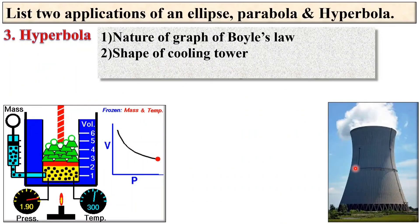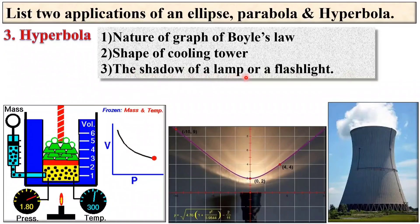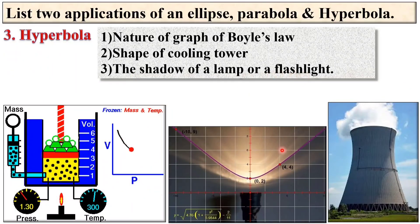Next shape of cooling tower. Here you can see hyperbolic shape of the cooling tower. Next the shadow of a lamp or a flashlight. Here you can see.